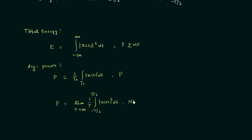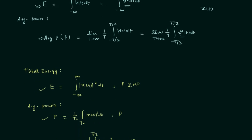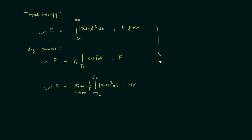Write down these three formulas so we can use them directly while solving questions. It is also important to determine whether a signal is an energy signal or a power signal. These expressions are normalized expressions for total energy and average power — I am calling them normalized because we have assumed resistance equal to 1 ohm. Remember this point.